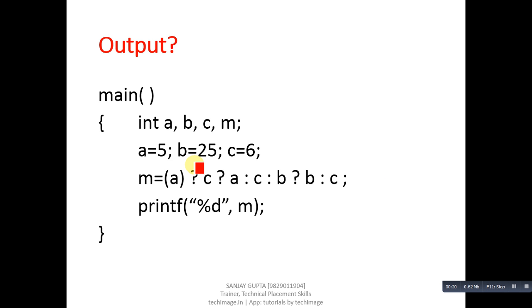So first code segment is based on conditional operator. Here three variables a, b, and c are declared, then conditional operator is used. The output of this code is 5. Now check how this output is produced: m equals to a question mark c question mark a colon c colon b question mark b colon c.